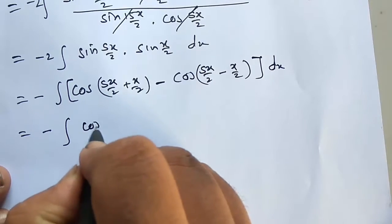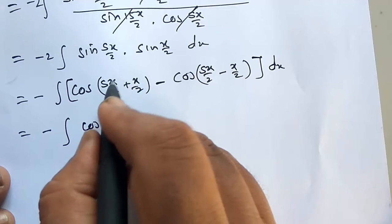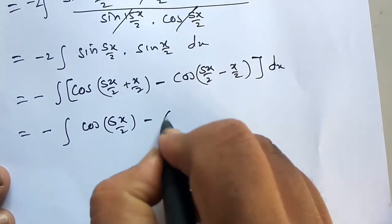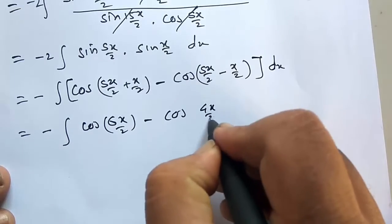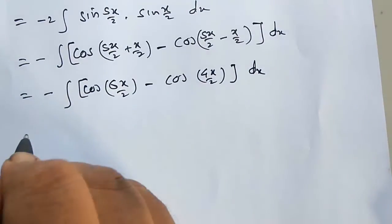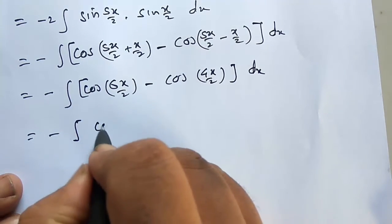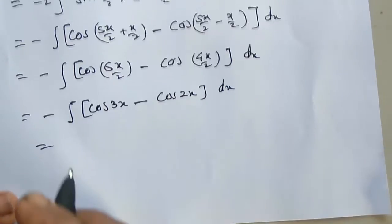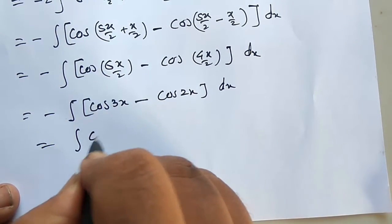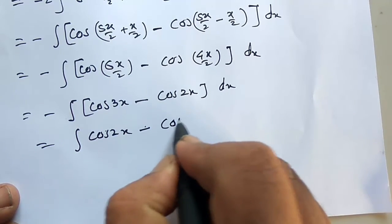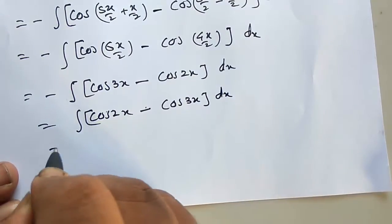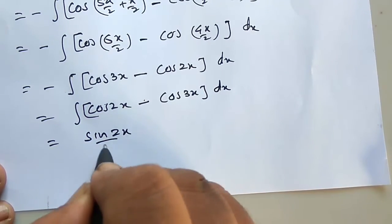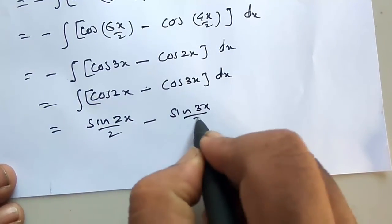This is equal to cos of (5x/2 + x/2) which equals 6x/2, minus cos of (5x/2 - x/2) which is 4x/2, bracket complete dx. So this equals minus integration of cos 3x minus cos 2x dx, which equals integration of cos 2x minus cos 3x dx. Integration of cos x is sin x, so it is sin(2x)/2 minus sin(3x)/3 plus C.